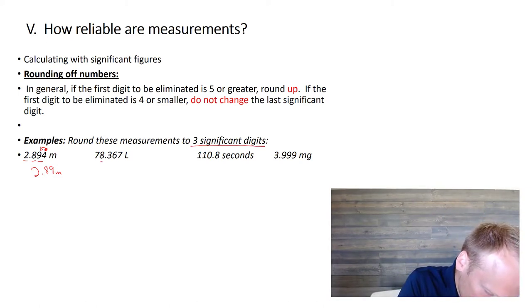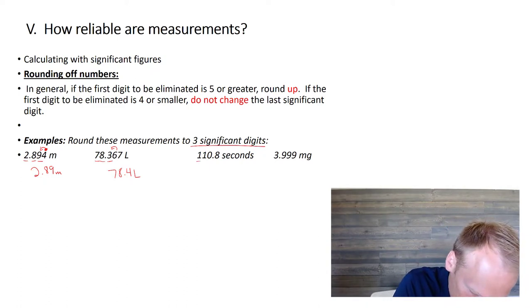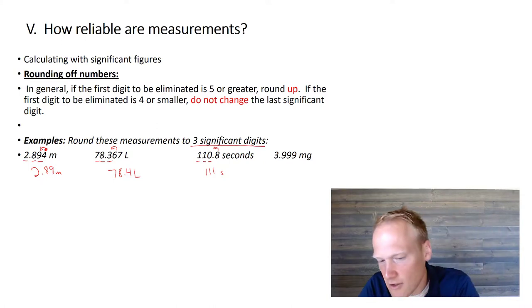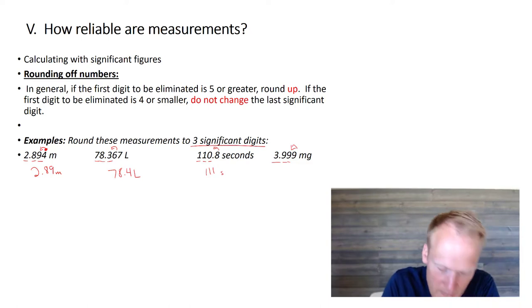So, we're going to take the first 3 numbers, then we're going to look next door at the 4. The 4 is not big enough to round the 9 up, so we'd have 2.89 meters. 78.367. If we look, we've got 1, 2, 3 that we're going to keep. The 6 will round this up, and it would be 78.4 liters. 1, 2, 3. The 8 will round this up, and we'd get 111 seconds. Those 3 are pretty straightforward. The one that gets tricky is this one over here. It's not tricky. You just got to think about what's going on.